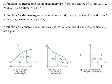This first one says a function f is increasing on an open interval I if, for any choice of x1 and x2 in I with x1 less than x2, we have f of x1 less than f of x2.